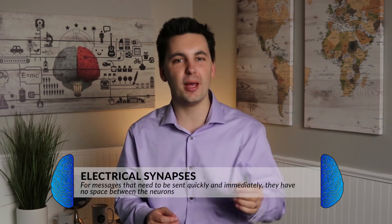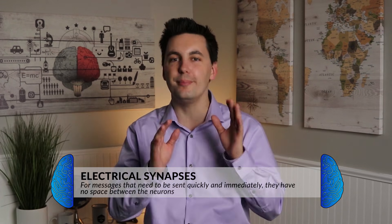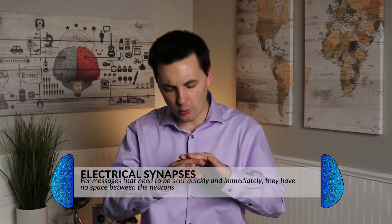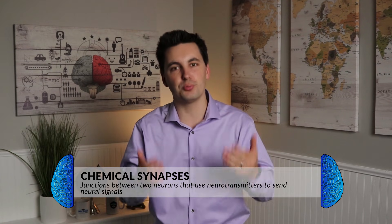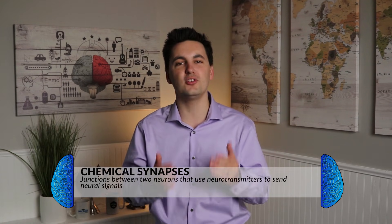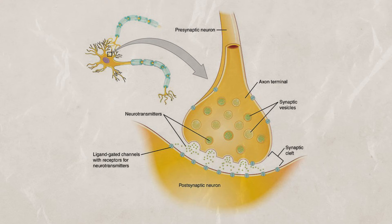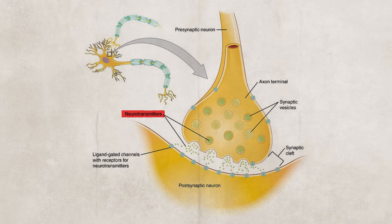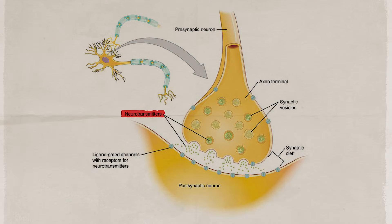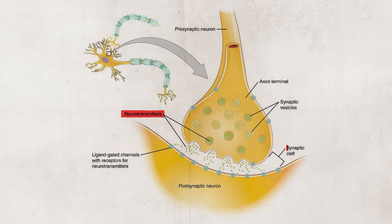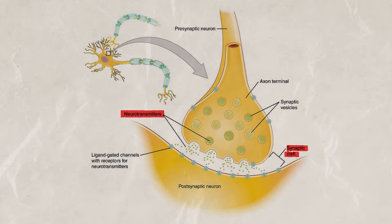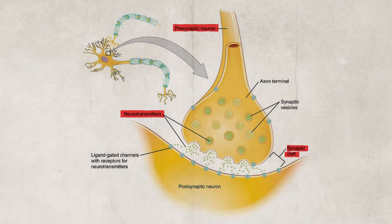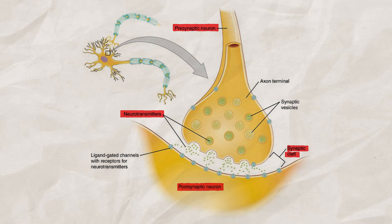There are electrical synapses and chemical synapses. Electrical synapses are for messages that need to be sent quickly and immediately — they are connected and have no space between neurons. Chemical synapses take longer to process. Most of the interactions we're talking about are chemical synapses. Chemical synapses use neurotransmitters, which are chemical messengers diffused across the synaptic gap, also known as the synaptic cleft. It's a narrow space between the neurons — specifically the pre-synaptic terminal of one neuron and the post-synaptic terminal of the next.